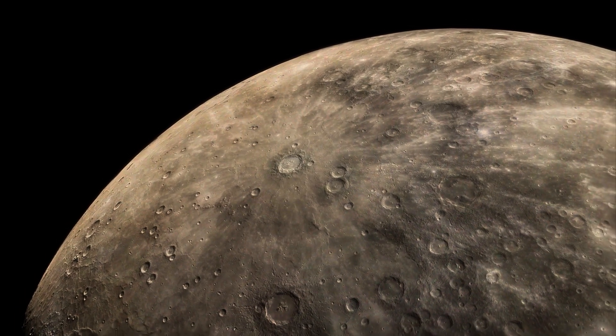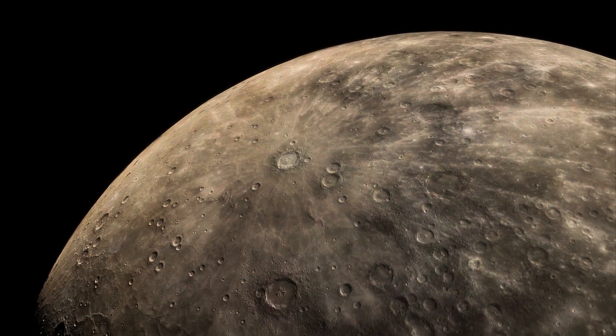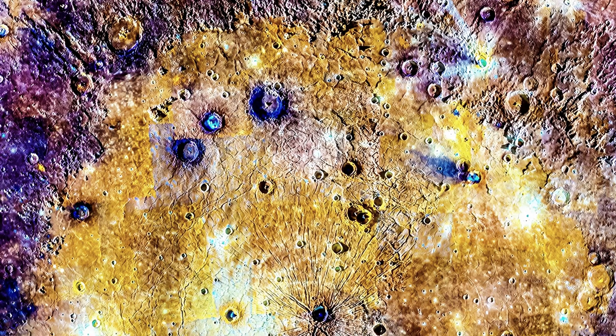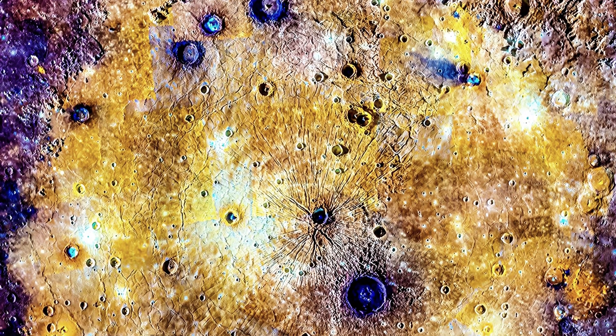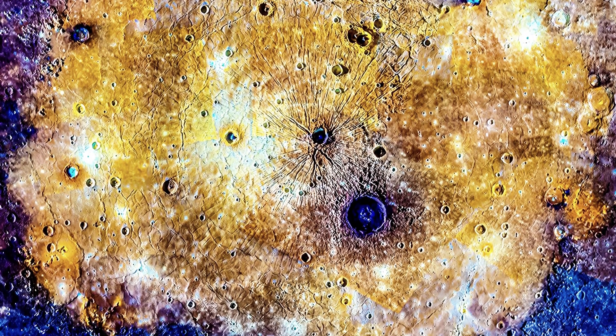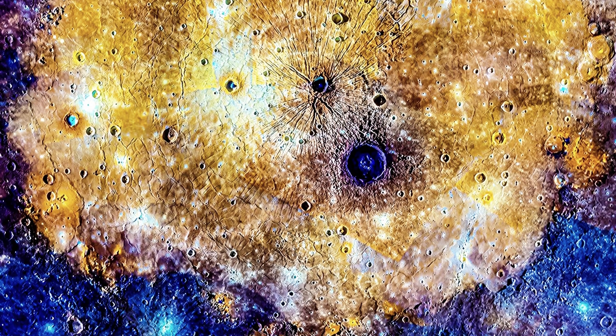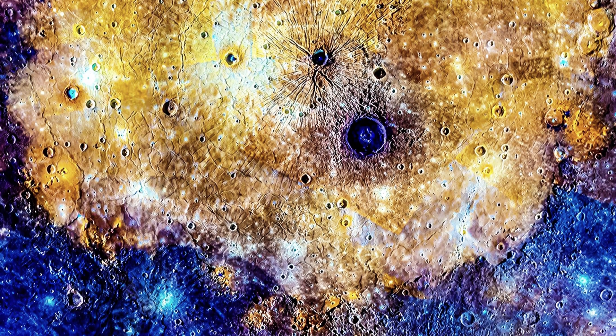Look closer. Those craters? They're our scars, too. The Caloris Basin, 960 miles wide, forged by an asteroid the size of West Virginia, triggered lava floods that reshaped Mercury.